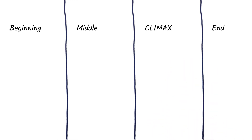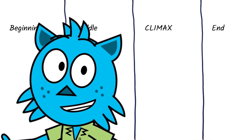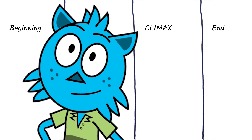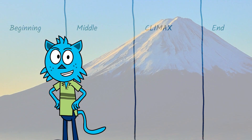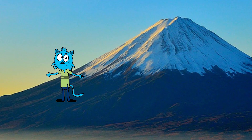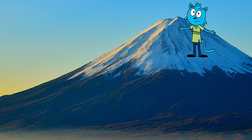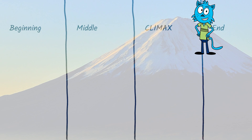Narrative stories build up to a climax — the most exciting, intense part of the story where the problem is solved. It's like a mountain. You climb up and up and up until you reach the summit. A story builds up and up in intensity until it reaches the climax.